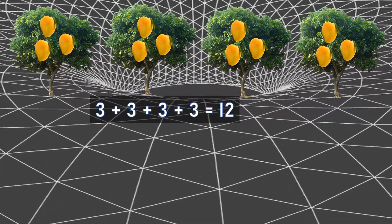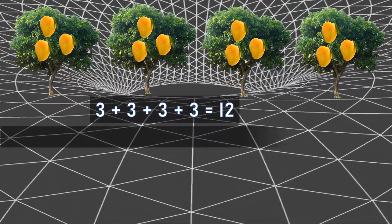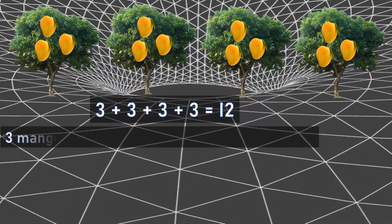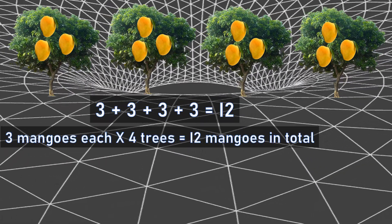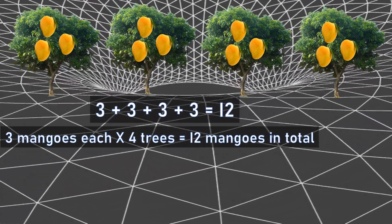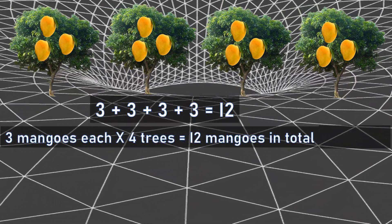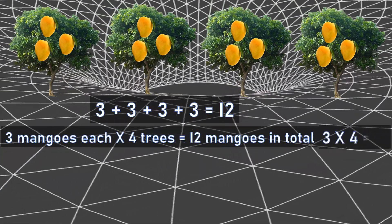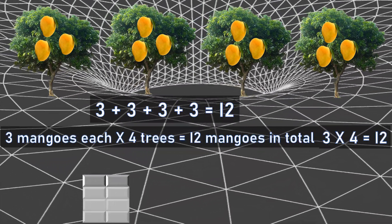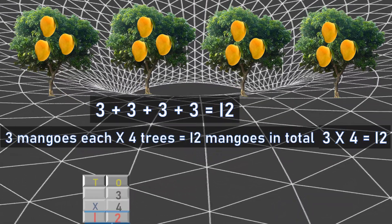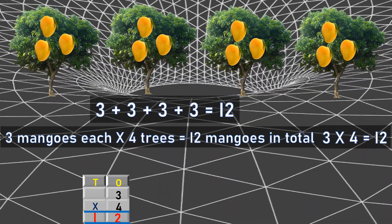Three plus three plus three plus three is equal to twelve. That means four trees with three mangoes — so four times we are going to take three. Three mangoes each into four trees will give me twelve mangoes in total. Now recall your three table: three fours are twelve. Similarly we are going to do the calculations in the box format — three into four is equal to twelve.